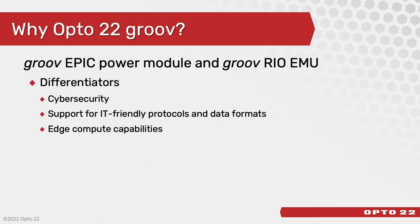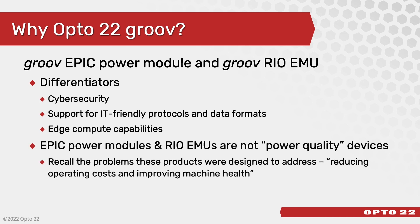With the Groove EPIC, take those same tools and add the capability to run Inductive Automation's Ignition Edge as well as a control program via CodeSys or PAC Control. So why Opto 22 Groove? There are a lot of power monitoring products on the market, some even very low cost. What makes the Groove different: number one is cybersecurity — no other power monitoring product has a fully configurable firewall, encrypted communications, and authenticated user access. Additionally, support for IT-friendly protocols and data formats, plus edge compute capabilities through Node-RED and secure shell access. Note that the EPIC power module and RIO EMU are not power quality devices; they are designed to address reducing operating costs and improving machine health.